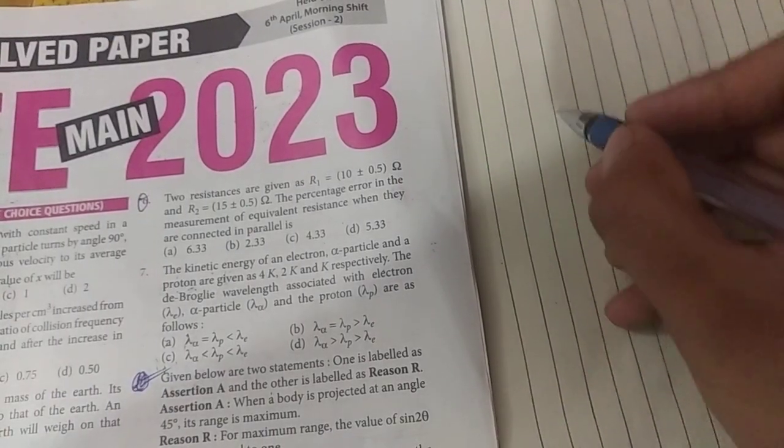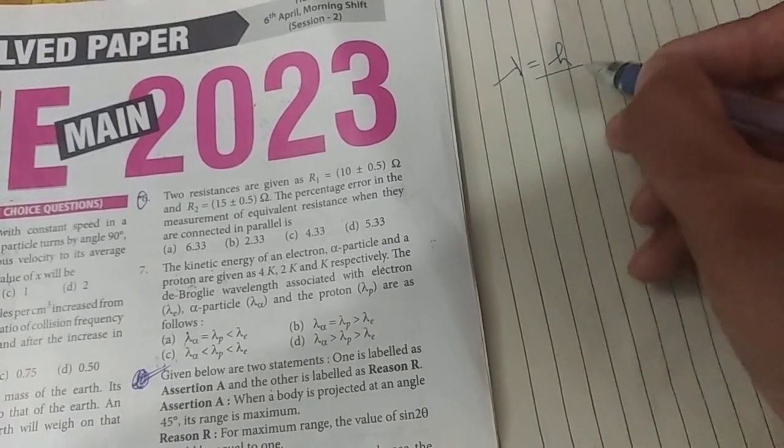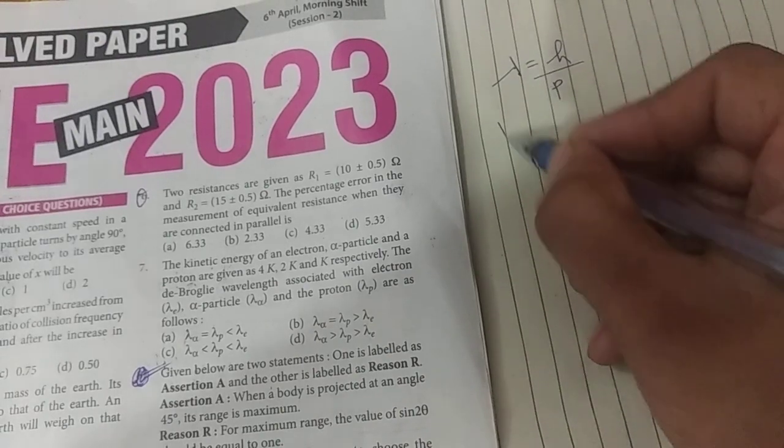So we have basically 3 particles and their de Broglie wavelength. We have to use the formula which is lambda is equal to h over momentum. So here 3 particles are electron, alpha and proton.